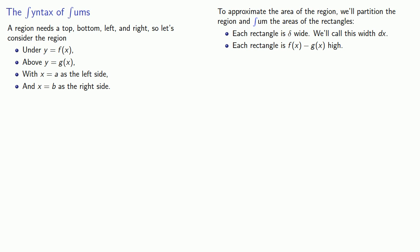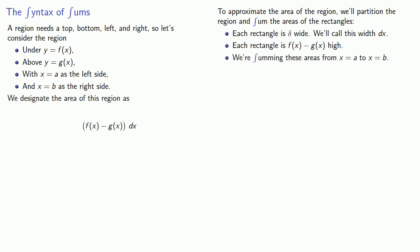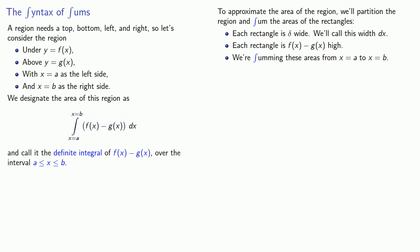each of our rectangles is going to be f of x minus g of x high. So the area of any individual rectangle is going to be f of x minus g of x times dx. That's just one rectangle, and we want to sum all of these rectangles from x equals a to x equals b. We designate the area of the region using this notation, which we call the definite integral of f of x minus g of x over the interval a to b.